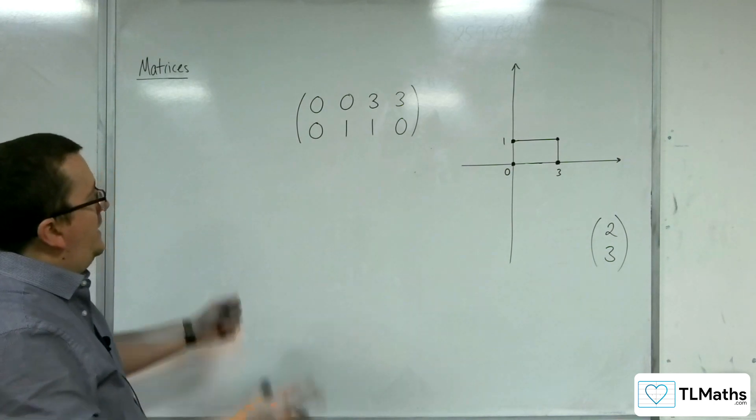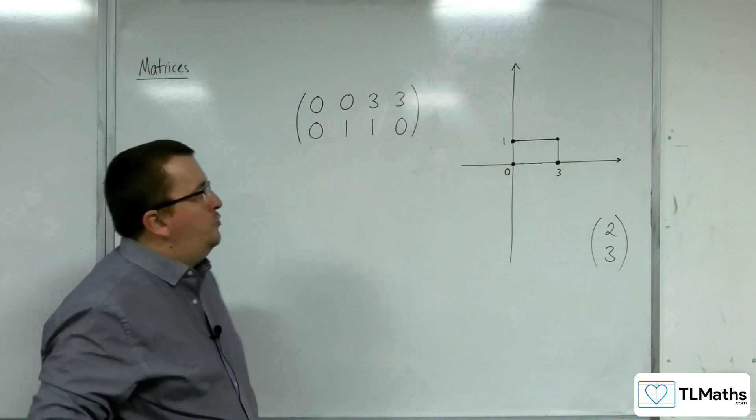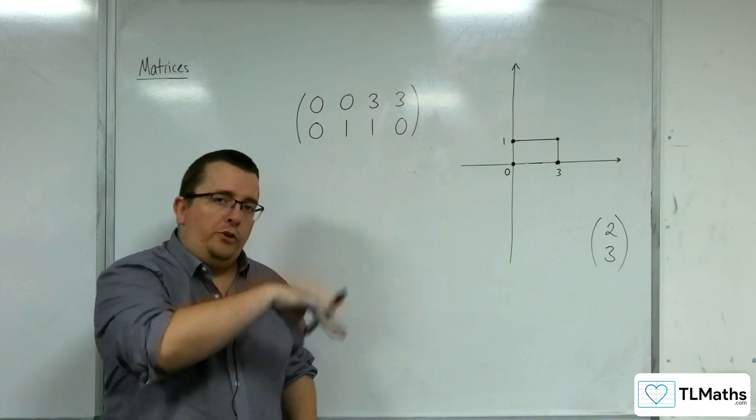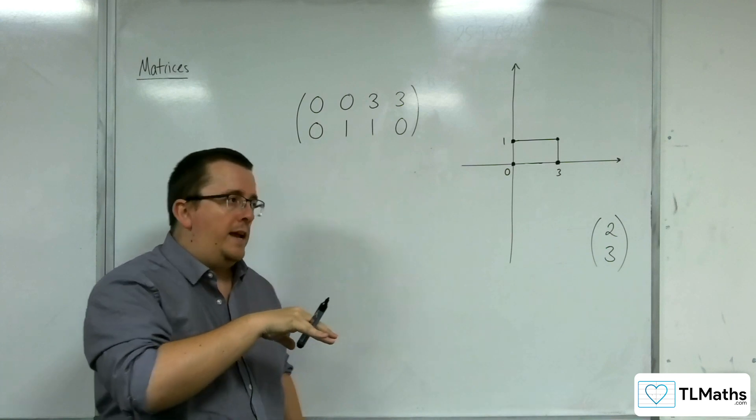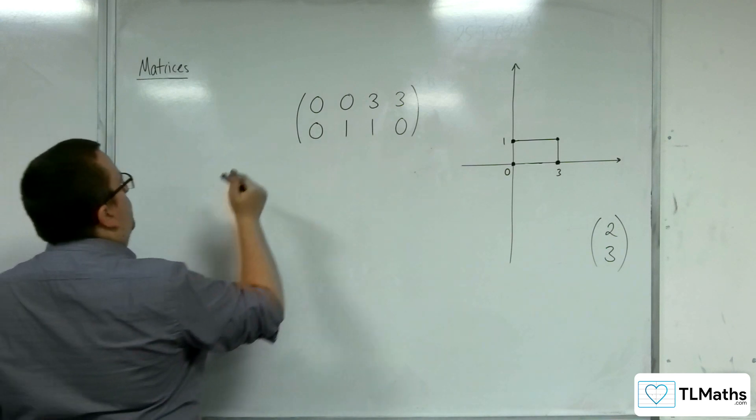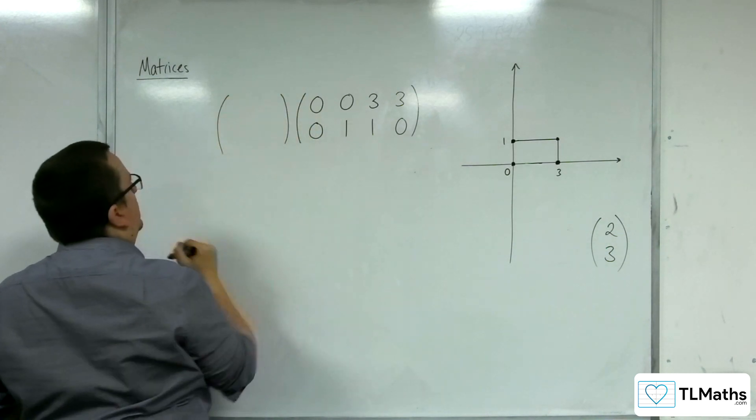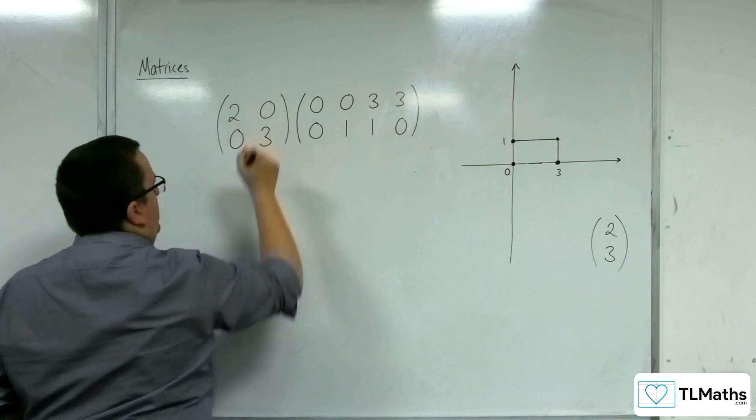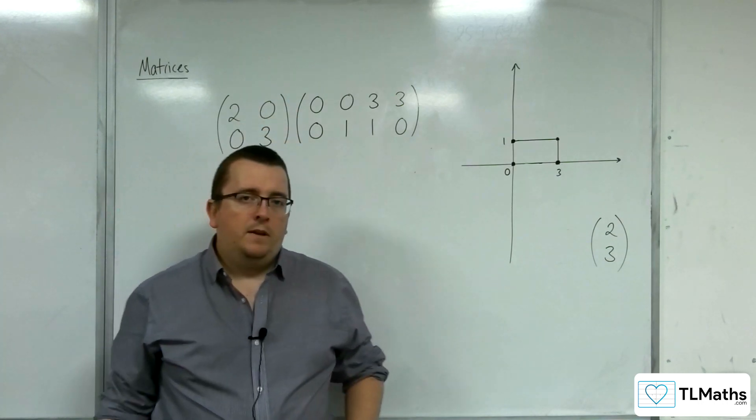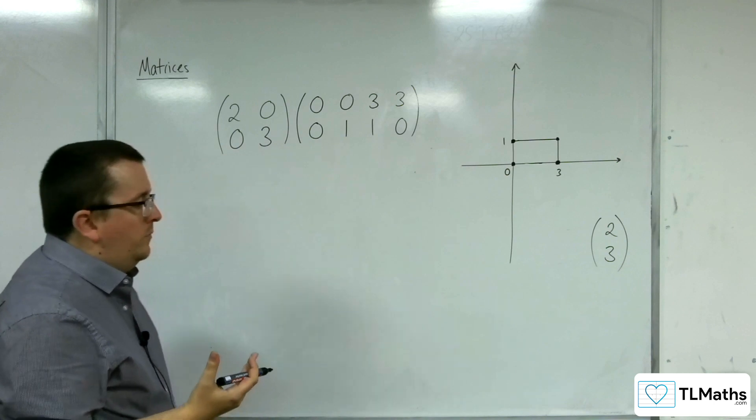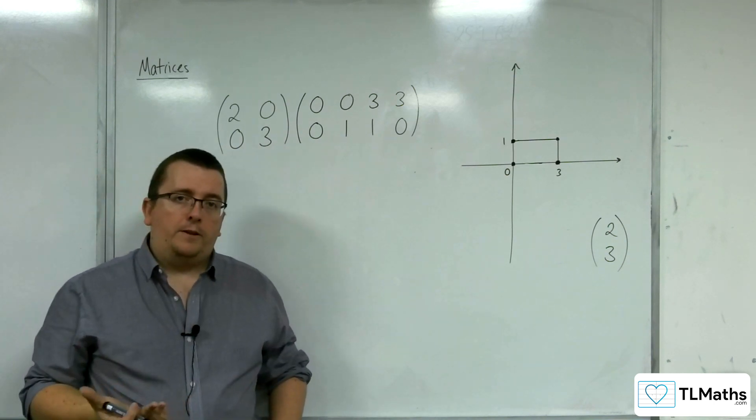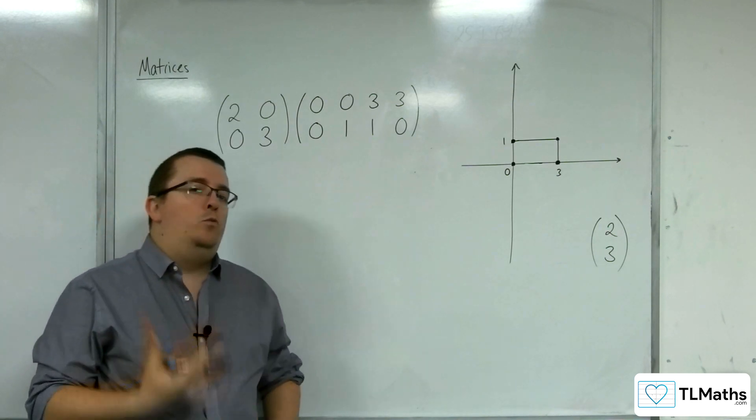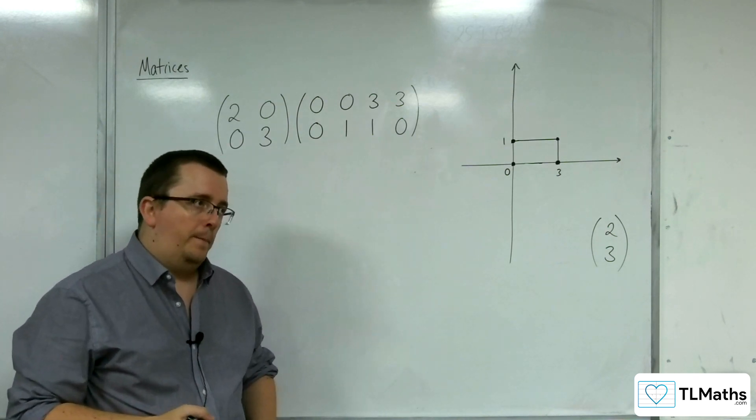So we have a matrix that describes each of the corners of my rectangle. And now what we're going to introduce is a matrix being applied to that set of coordinates. So what I'm going to do is I'm going to multiply by a matrix, let's say, 2, 0, 0, 3. Now we don't know what that matrix does. But what is important is the order in which I have written these matrices down.